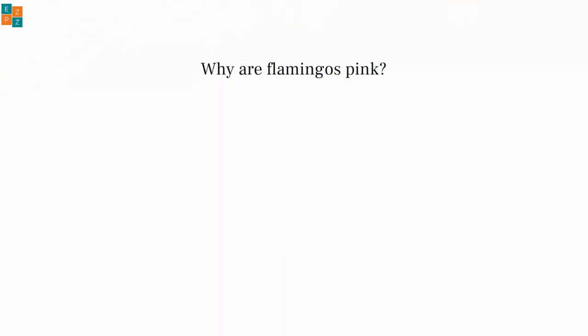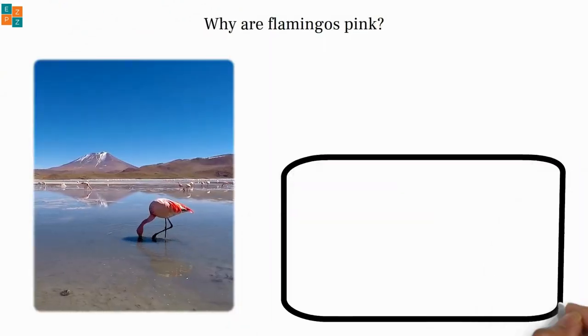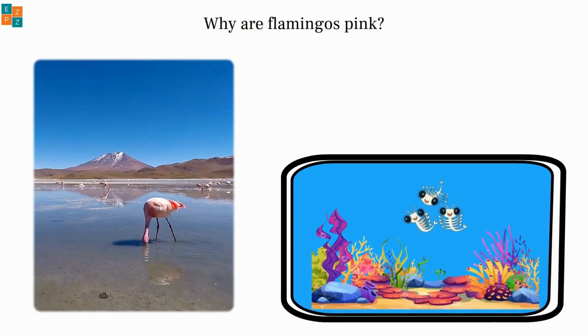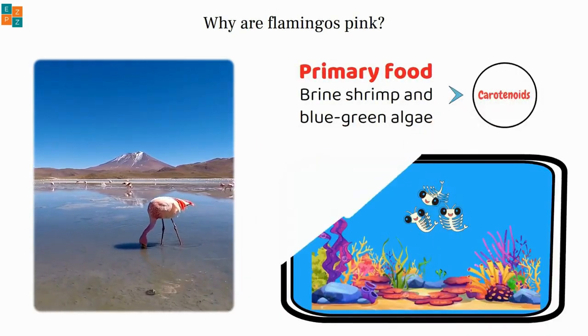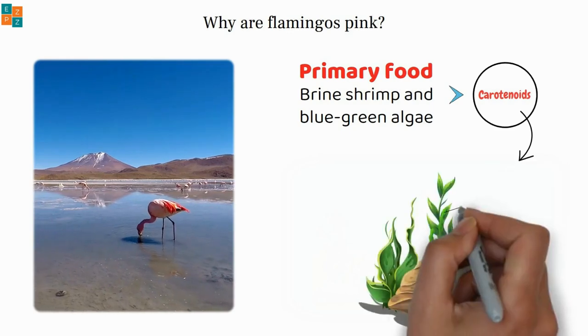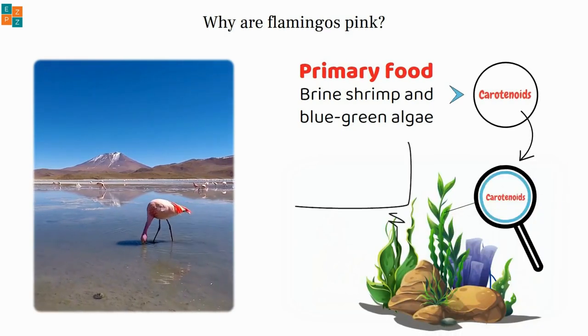Why are flamingos pink? Flamingos get their pink color from their diet. Their primary food source is often brine shrimp and blue-green algae that contain compounds called carotenoids. Carotenoids are natural pigments found in plants and algae.